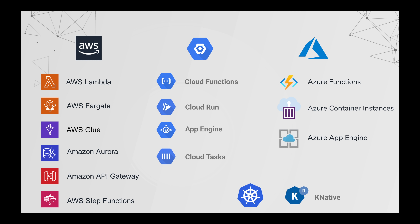Kubernetes also provides something called Knative, which is a serverless offering over Kubernetes. You can run containers based on events and have Knative deployed on-premises within your Kubernetes clusters. Knative acts as a layer over the Kubernetes cluster and you can use it to serverlessly create and destroy containers based on your need.